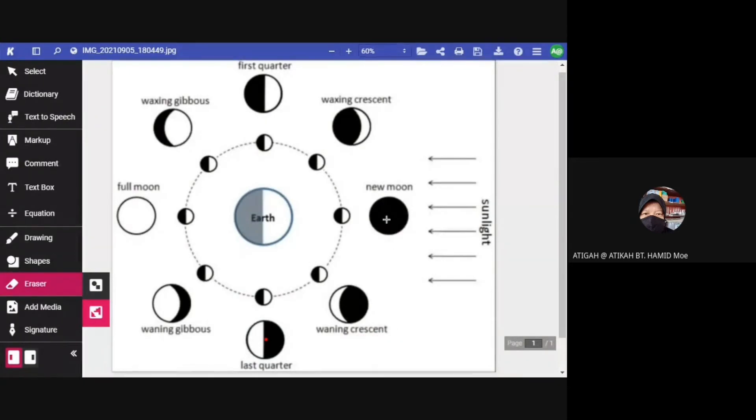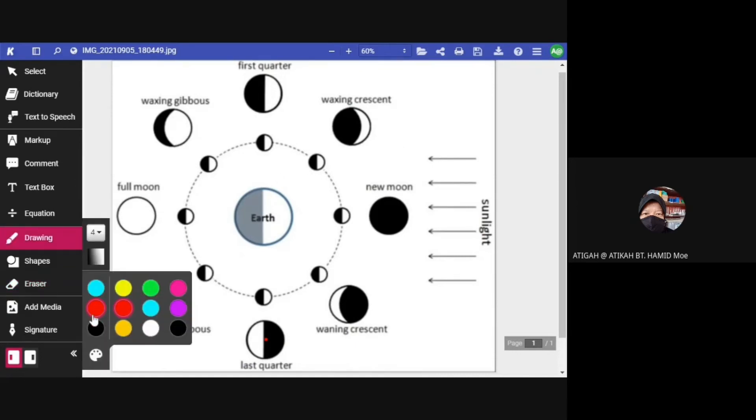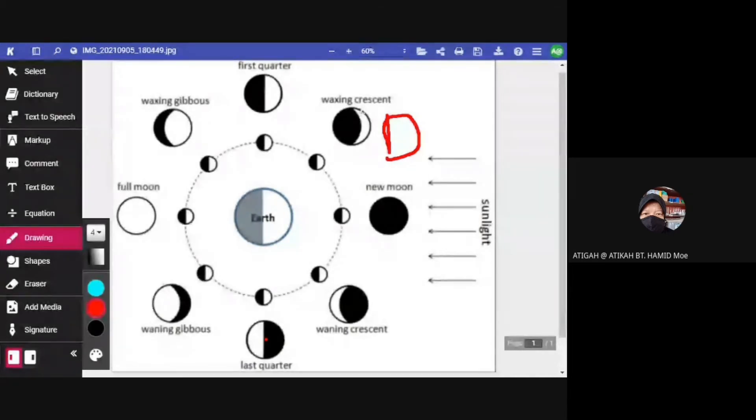From new moon, we go to crescent. This crescent is a waxing crescent. This shape is like an alphabet D, capital letter D. And then, look at this. D shape. And continue with half moon. Half moon also, the shape is like D shape. Then, gibbous moon. Also, D shape.